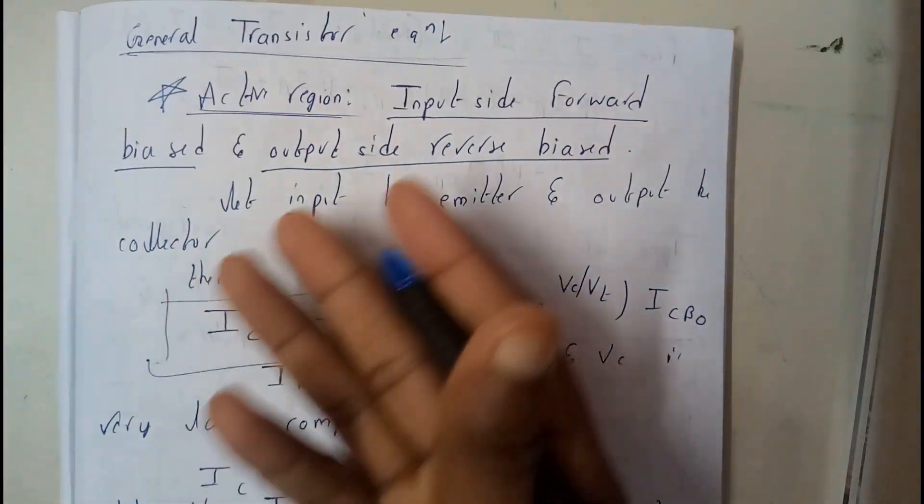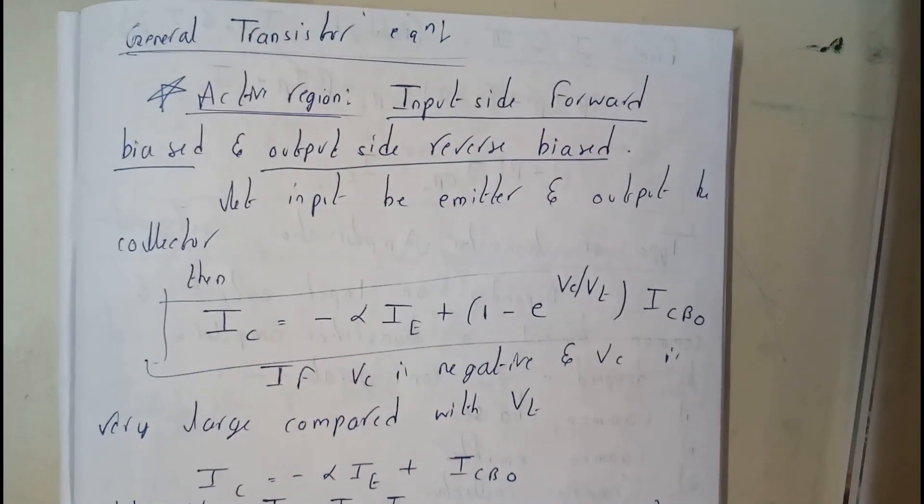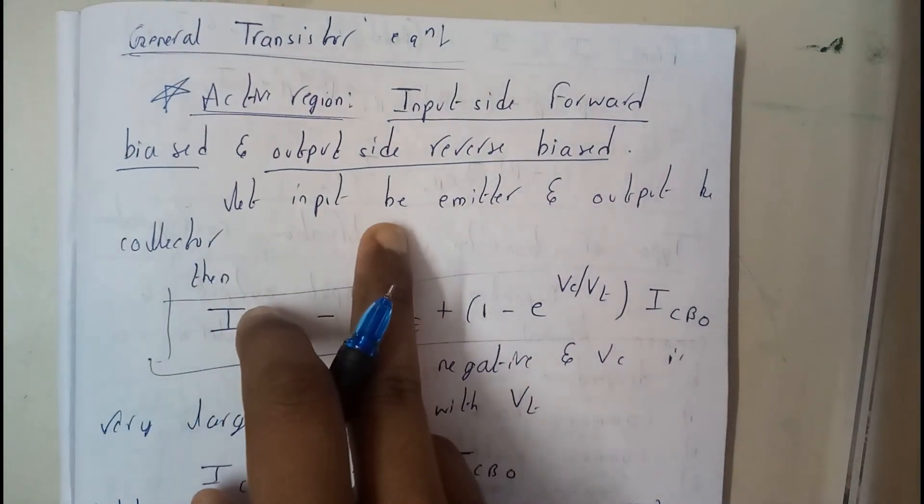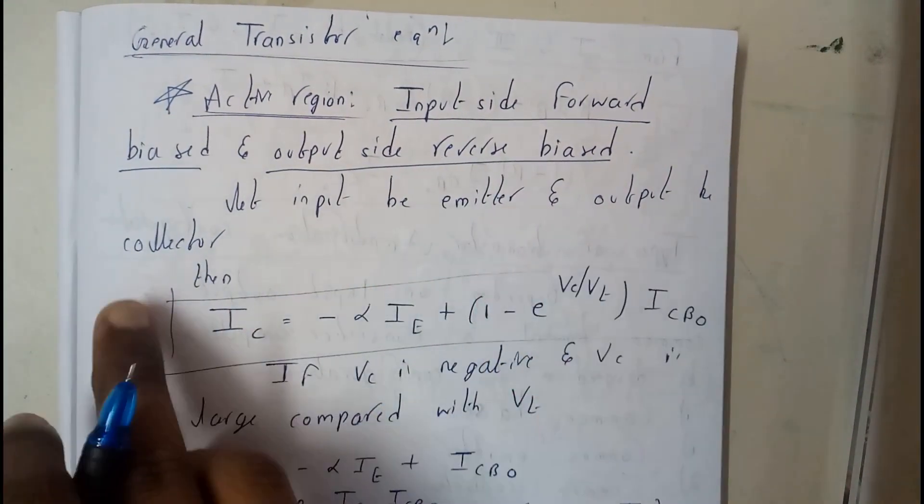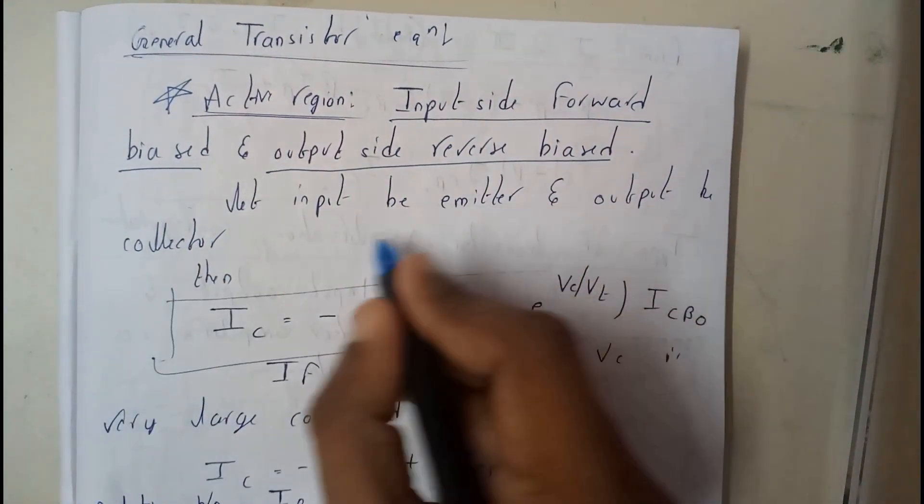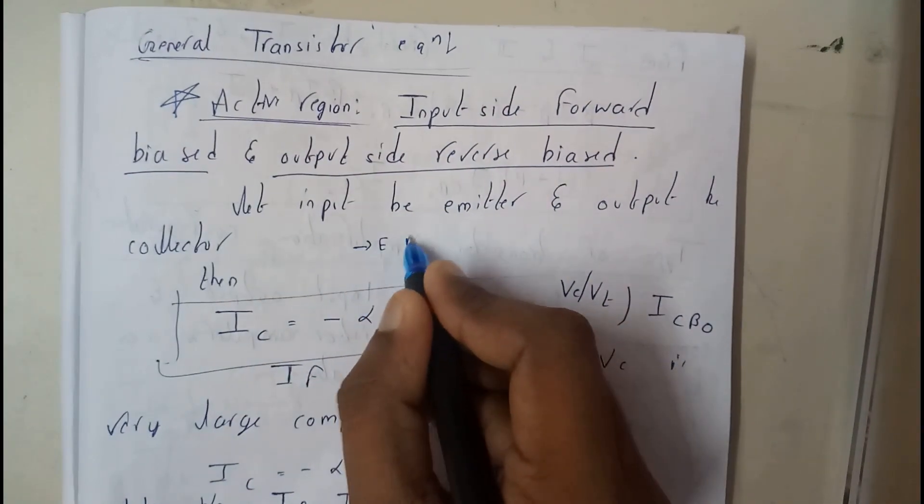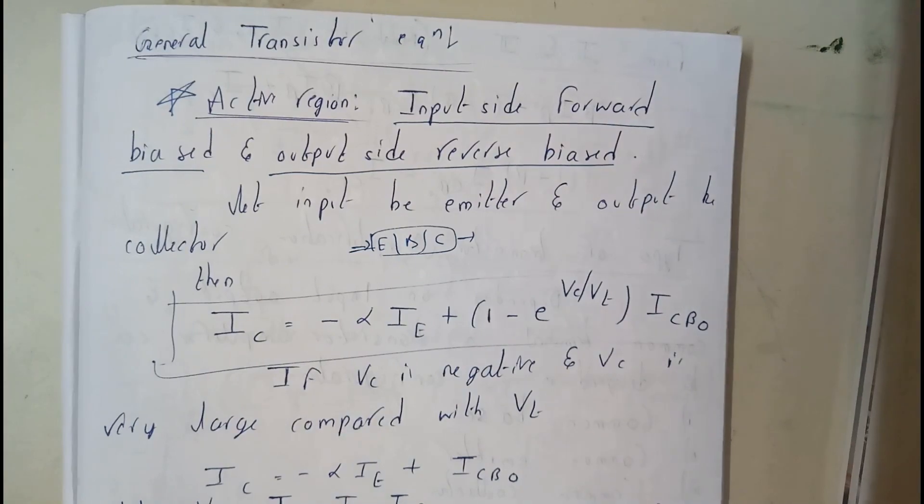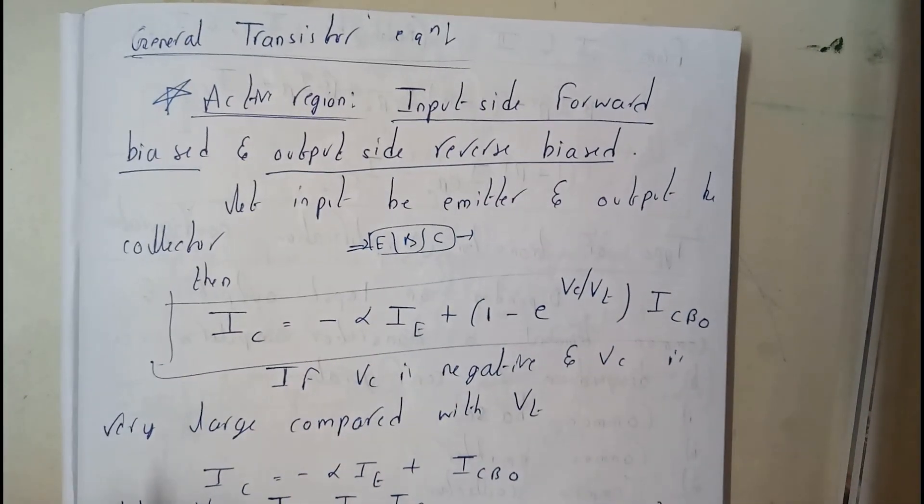So let us go first through active region. I covered this in almost three to four tutorials. Basically active region is nothing but for input side we will be giving forward bias and for output side we will be giving reverse bias. So let the input be the emitter and the output be collector. We know that emitter-base-collector, right? So emitter is our input, collector is our output.